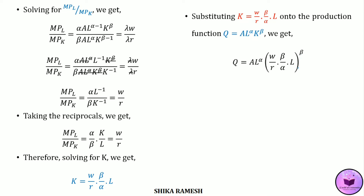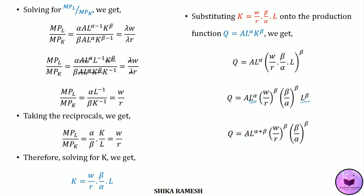Opening the brackets, we get q = A·L^α·(w/r)^β·(β/α)^β·L^β. Here we have L^α and L^β — since the base terms are common and this is in multiplicative form, we can add the exponents. So we get: q = A·L^(α+β)·(w/r)^β·(β/α)^β.